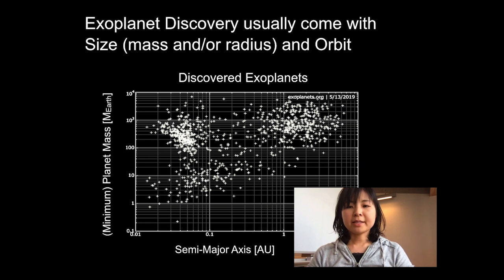Detection of exoplanets typically comes with two properties: the size and the orbit, including the distance from the host star. For evaluating their potential for life, we definitely need to get more information. But how?